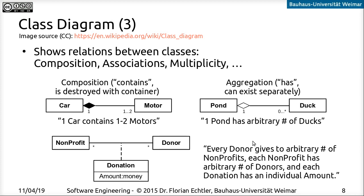You can also have more complex relations where the relation itself has attributes, modeled by a separate class. In this example, you have an arbitrary number of non-profits on the left and an arbitrary number of donors on the right. Each individual relation has an attribute — so every donor gives to some arbitrary number of non-profits, each non-profit has an unrelated number of donors, and for each individual connection there is an individual amount. This is a very complex relation, but still something you can model in UML and represent as Java classes.